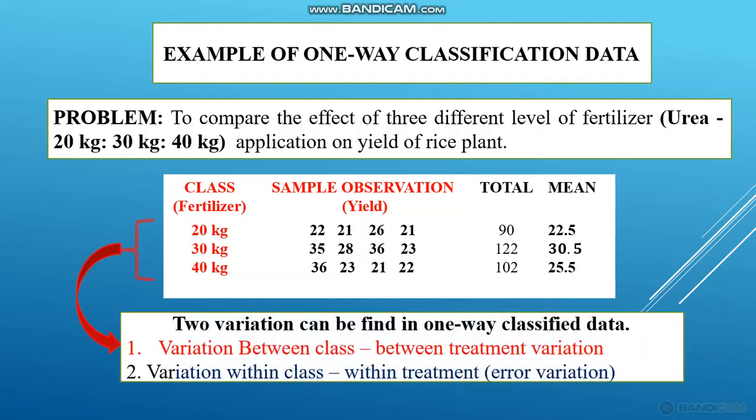In this data there will be variation. The total variation can be seen in two parts. The first is the variation between classes, which is called treatment variation, because we are comparing the three treatments — that is, the three classes. The second part is the variation within classes, which is called within-treatment variation, or error variation.